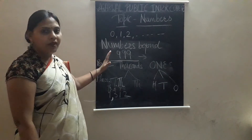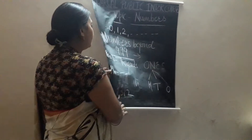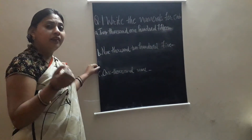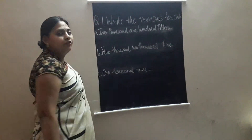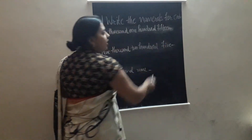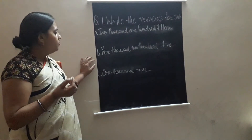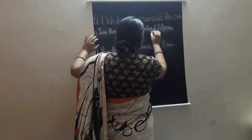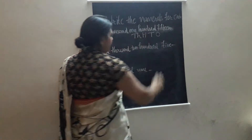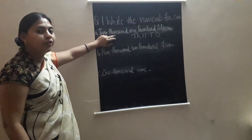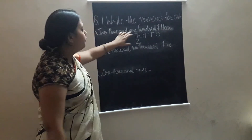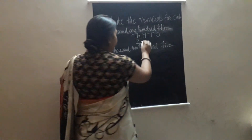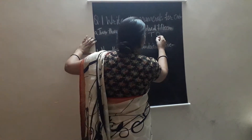Now we will understand this topic by an example, by taking a question. The question is: write the numbers for each. Our question is 2,150. We use place value: ones, tens, hundreds, and thousands. We put two at the thousands place, one at the hundreds place, and fifteen — we write fifteen here.